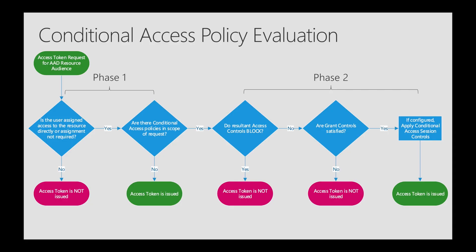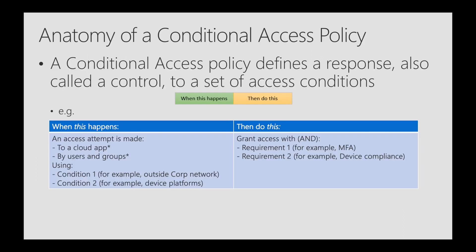Conditional access policies answer questions about who should access your resources, what resources they should access and under what conditions. Policies can be designed to grant access, limit access with session controls or to block access. You build a conditional access policy by defining the if-then statements: if an assignment is met, then apply the access controls.